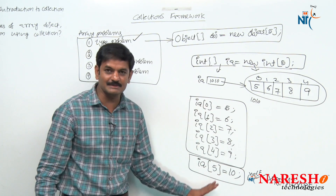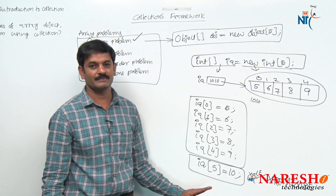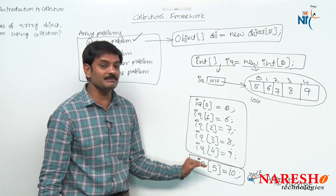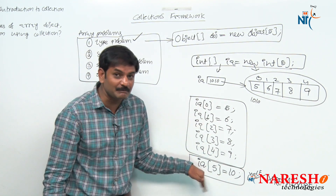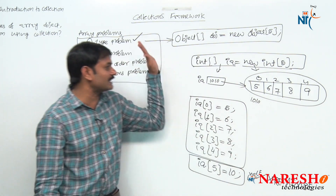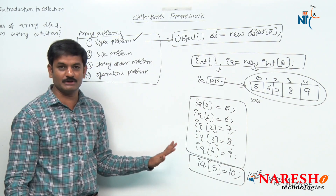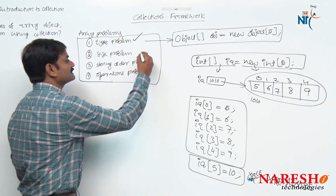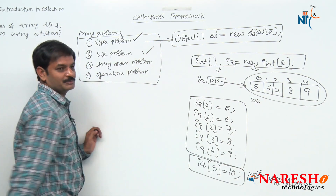This is the size problem. The size problem means we can store only the number of values equal to the size specified. If we try to store values beyond the size, JVM throws ArrayIndexOutOfBoundsException. Collection API came into picture specifically to solve this size problem.